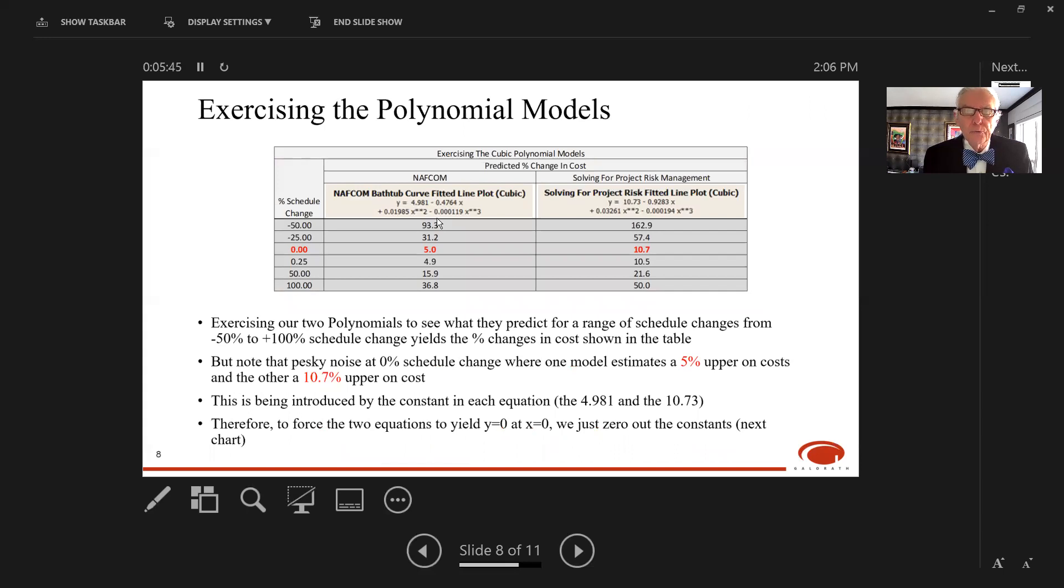Let's exercise the polynomials and see what we get. I've exercised the polynomial from NAFCOM on the left and the one from the project risk management book on the right. For minus 50 percent schedule compression, we're getting 93 percent from the NAFCOM equation, close to the 88 percent we saw before. The equation from the project risk book predicts 163 percent schedule cost impact for 50 percent schedule compression.